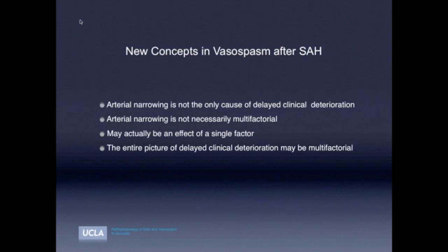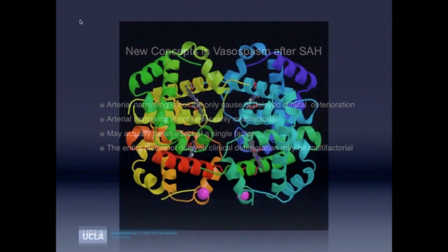Now, that increase in the endothelin-1 activity may actually be an effect of a single factor, as we will discuss in the following slides. But the entire picture of the late clinical deterioration most likely is multifactorial, and the contraction of the arteries is only one of those multiple factors.